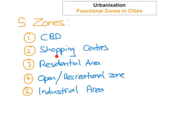So there we have it — these are the five different zones that you'll find in most cities: the CBD (Central Business District Area), Shopping Centre Area, Residential Area, Open Space and Recreational Area, and Industrial Area. I'm going to talk about each one of these now.